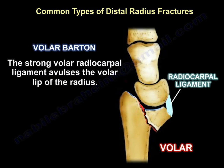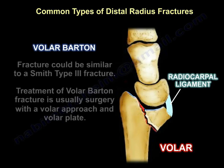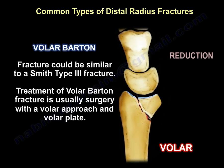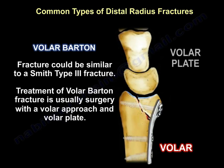You can see in the picture that the strong volar radiocarpal ligament avulses the volar lip of the radius, and the hand and wrist are dislocated with that fracture fragment. This fracture is very similar to a Smith type 3 fracture. Treatment of volar Barton fracture is usually surgery via a volar approach with a volar plate.